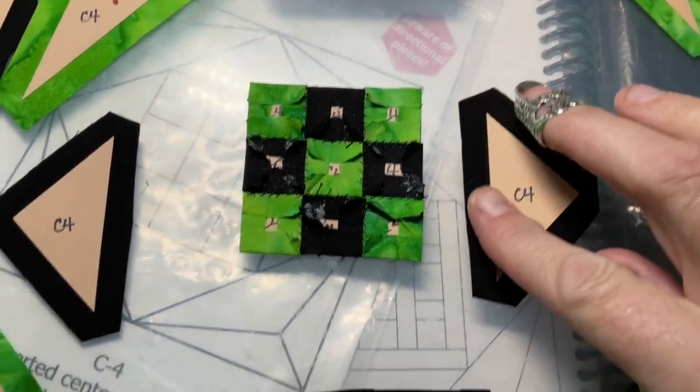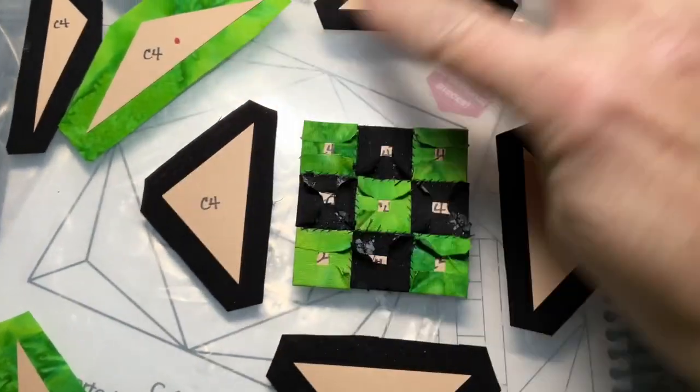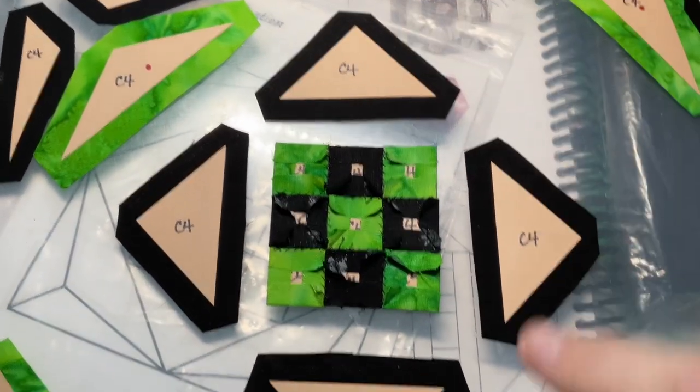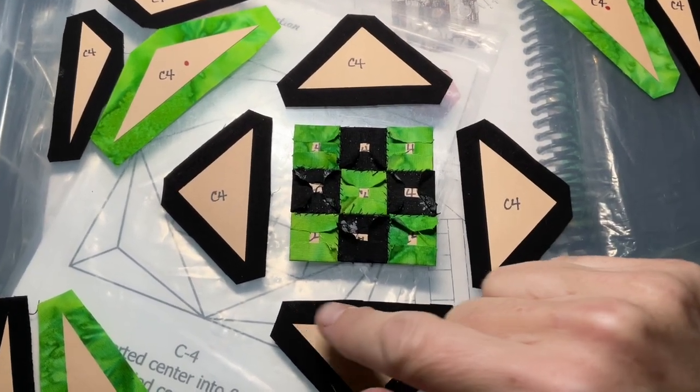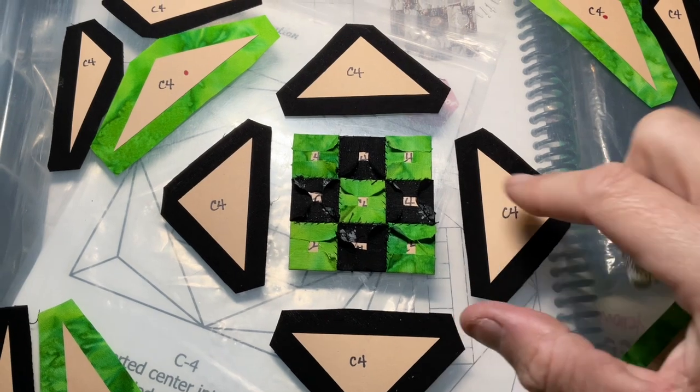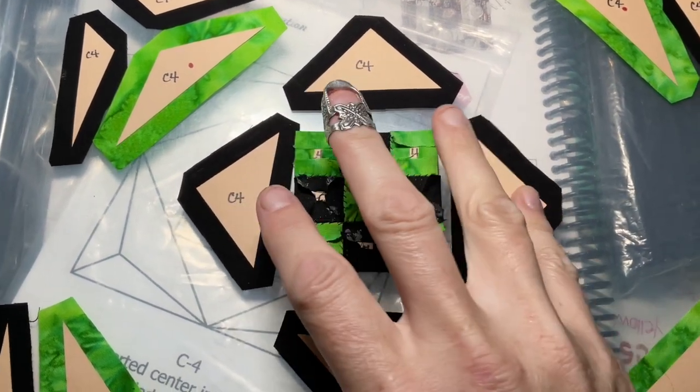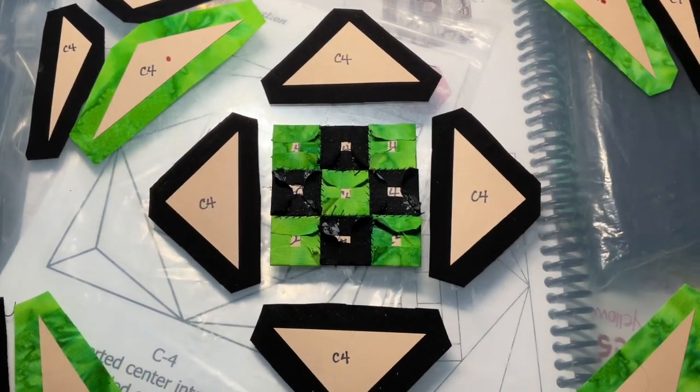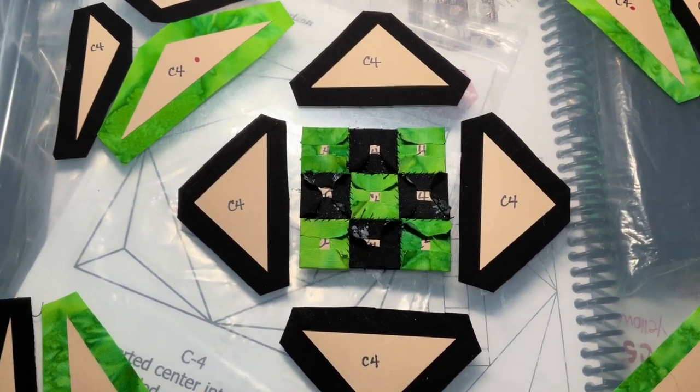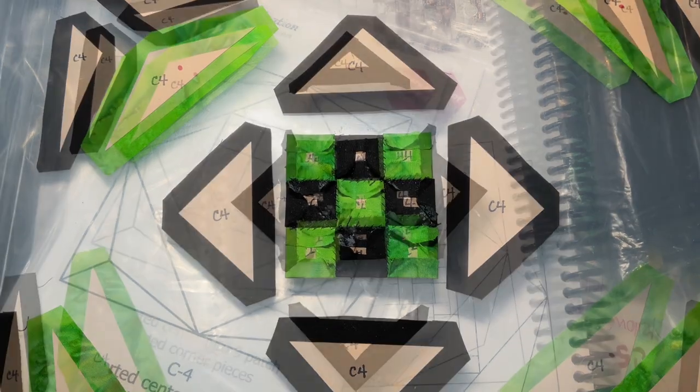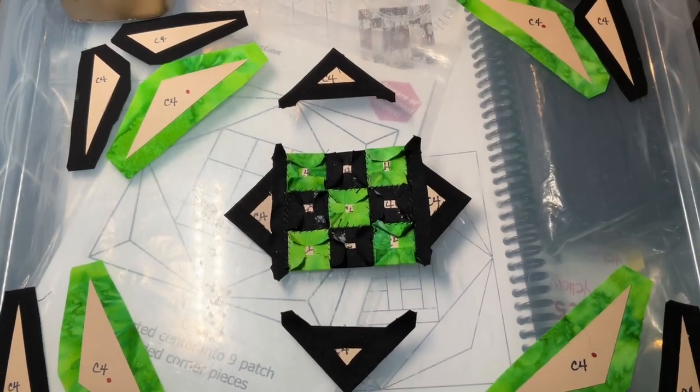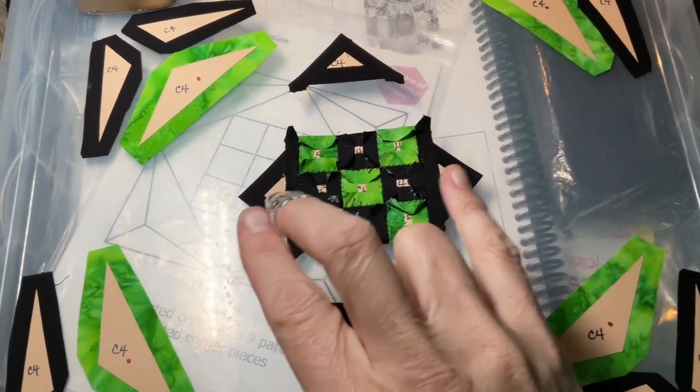Next thing is to attach the four side triangles. I'm going to baste these two one way—either legs first and then hypotenuse—and then this is going to be the opposite way, so it would be the hypotenuse then the legs. So when I get those attached, I'm going to get those basted and then attach them. So I basted all four side triangles and I've attached these two.